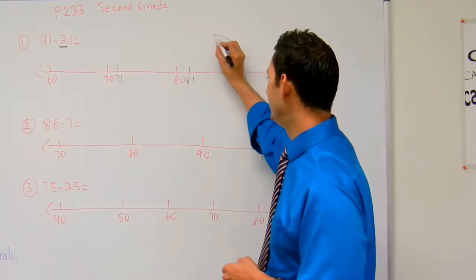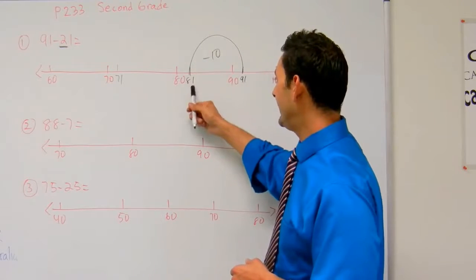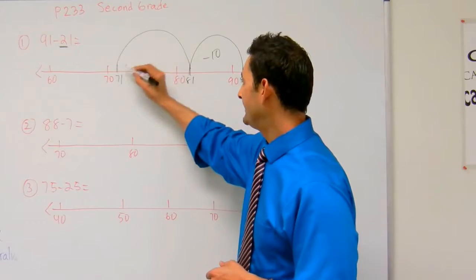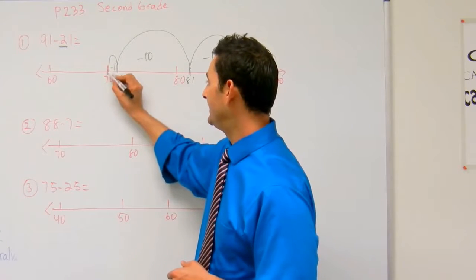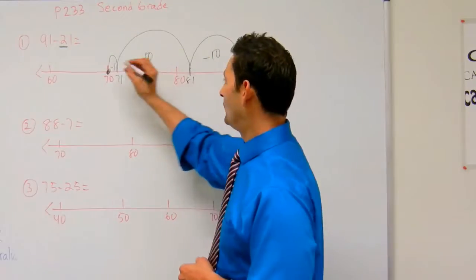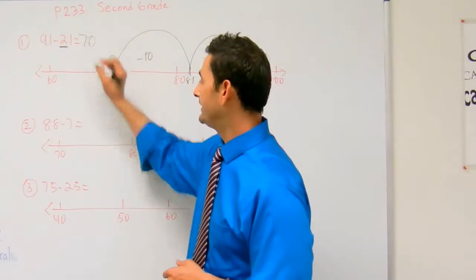I start at 91, minus 10 is 81, minus 10 more is 71, and minus 1 more is 70. So 91 minus 21 equals 70.